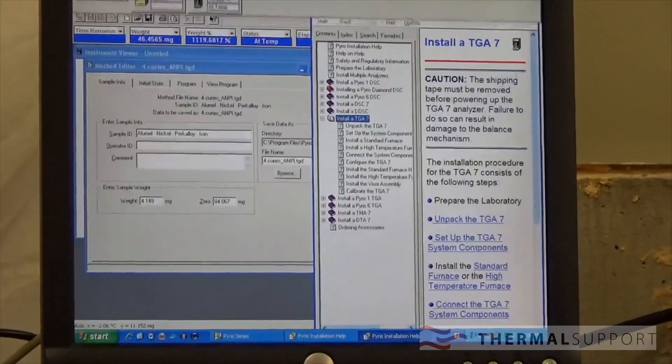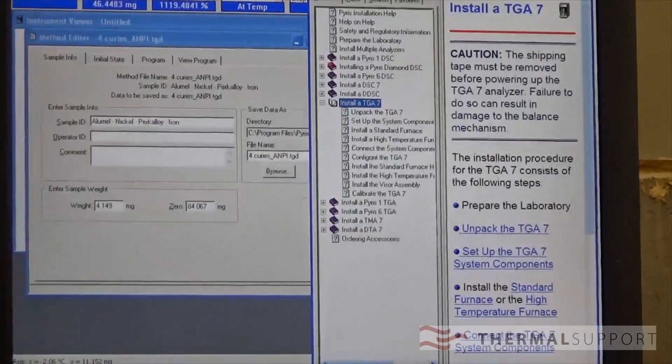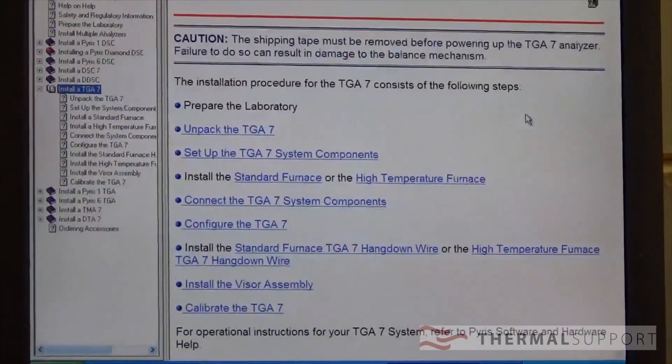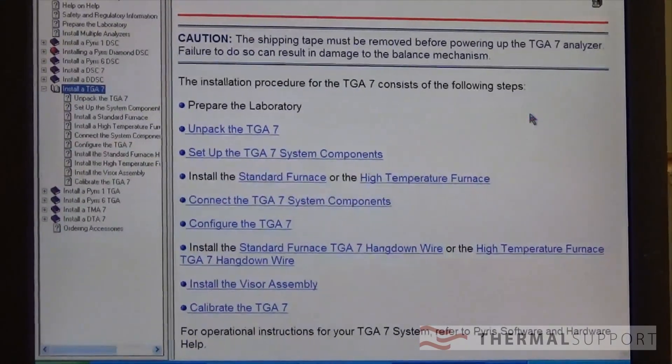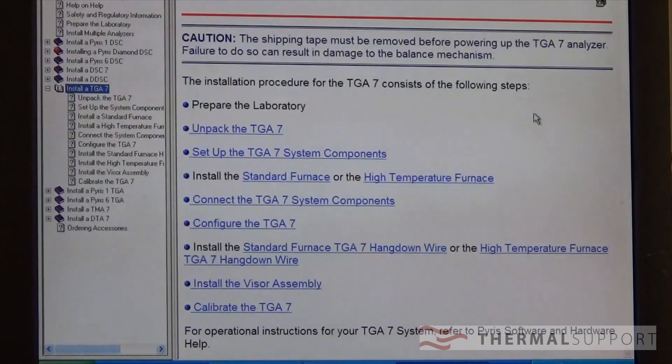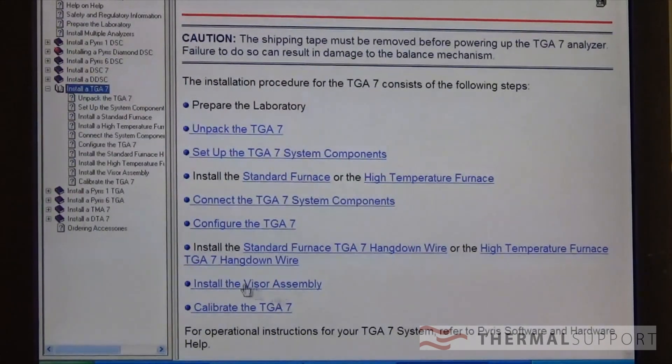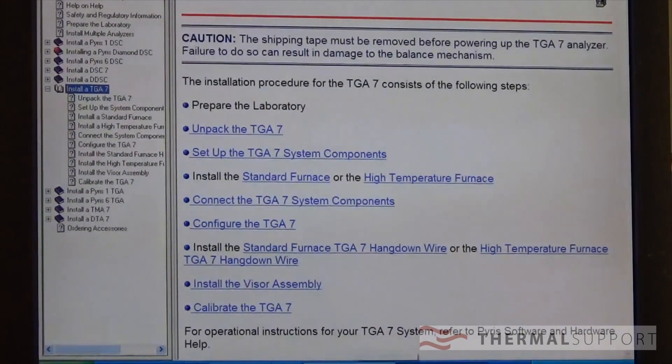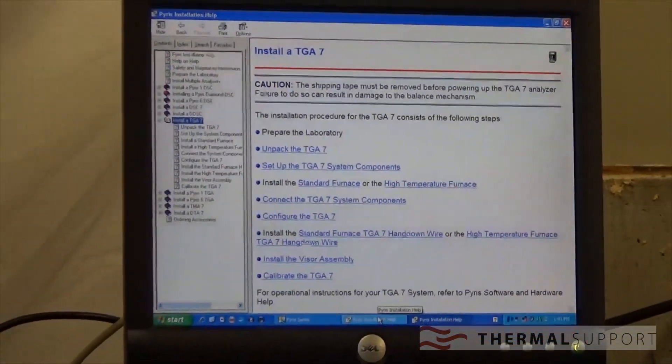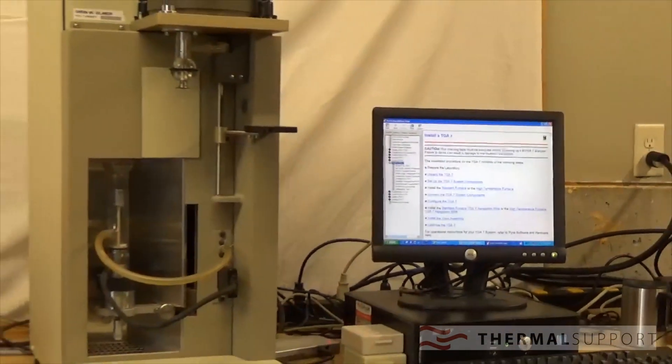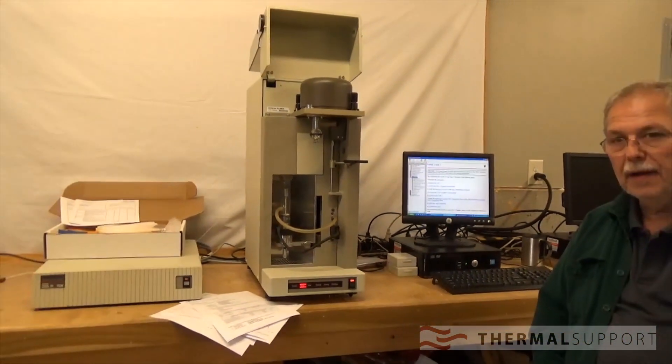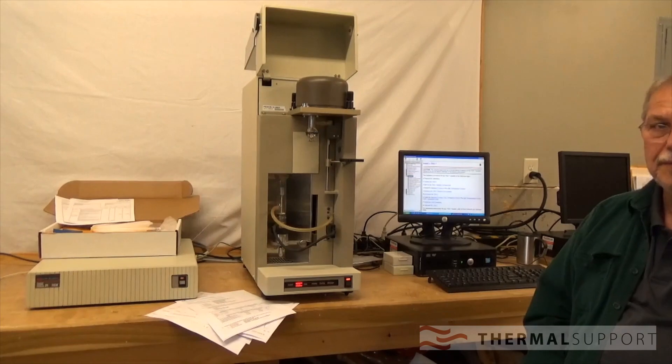If you have the TGA-7 installation, you could pretty much go through this entire thing. It'll have how to unpack it, what the system components are, you know, connecting those. Some of the information might be obsolete today. For instance, when this came out, I don't believe that they were putting quartz hangdowns on it. You know, that sort of thing. But other than that, it's pretty good. I hope that helps. Good luck, and we're always here if you need us. Thanks.